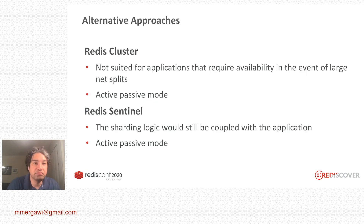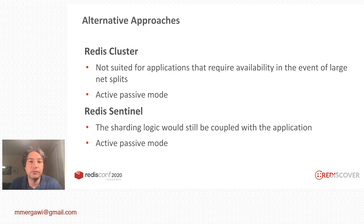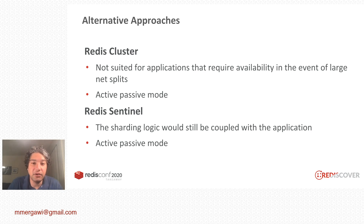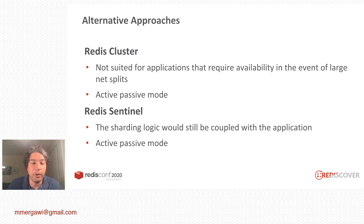We considered multiple approaches, including Redis Cluster. But it wouldn't really suit our problem — Redis Cluster was still in active-passive mode and wouldn't hold up well for large network partition failures, something we experienced a couple of times where a whole zone going down caused a complete site outage. We also considered Redis Sentinel, but the sharding logic would still be coupled with the application and it was still active-passive mode. We wanted to move away from that and use a more peer-to-peer approach.